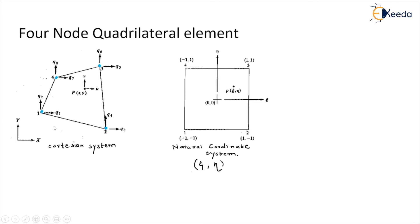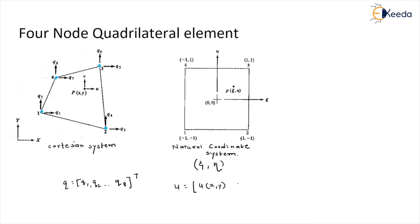The vector q represents the total coordinates of all the elements, starting from q1, q2 and up to q8. This vector denotes the elemental displacement vector. The displacement of the interior point P located at (x, y) is represented as u, which is a function of x and y, and v, which is also a function of x and y.